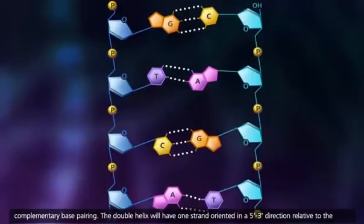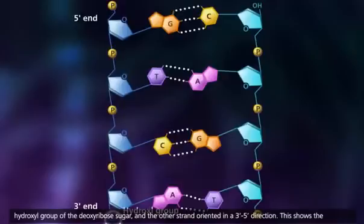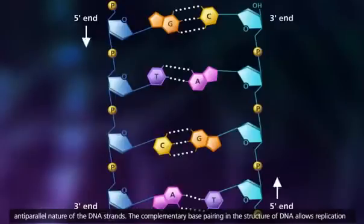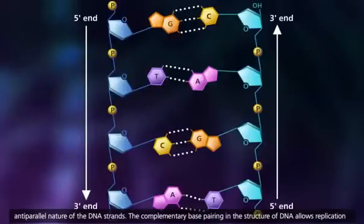The double helix will have one strand oriented in a 5' to 3' direction relative to the hydroxyl group of the deoxyribose sugar, and the other strand oriented in a 3' to 5' direction. This shows the anti-parallel nature of the DNA strands.